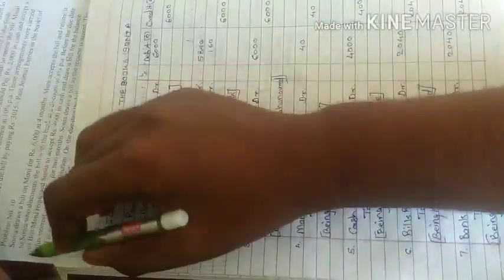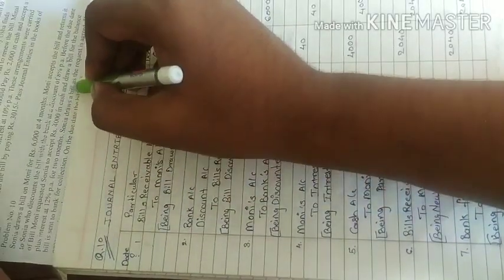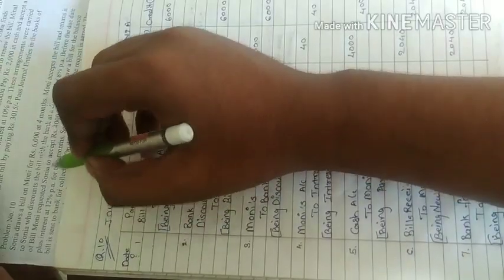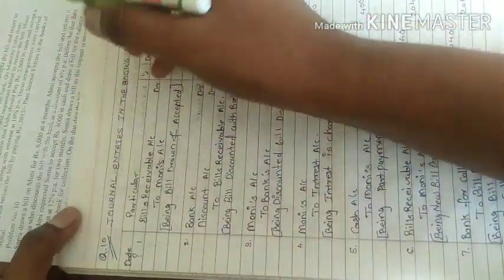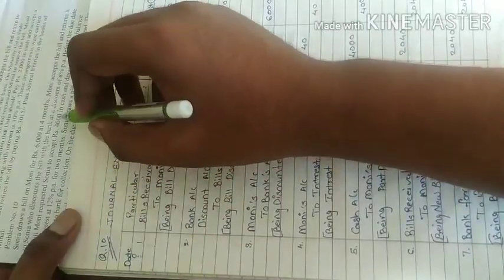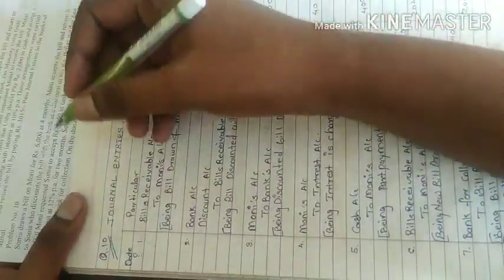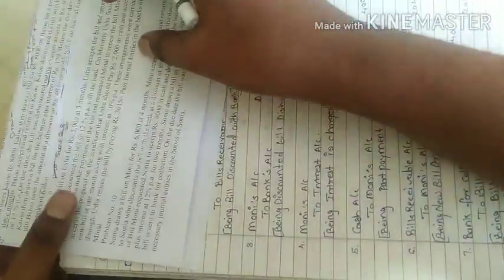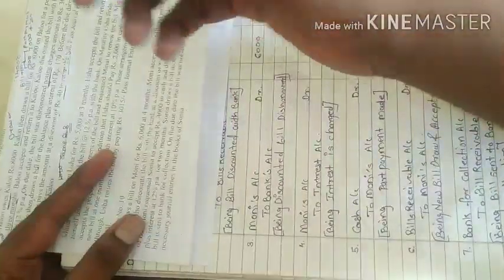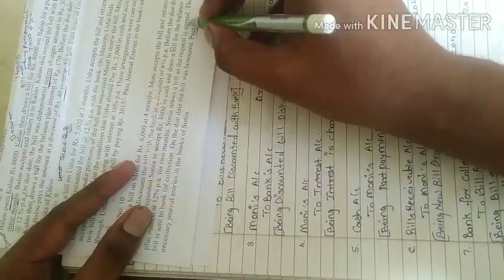Before the due date of bill, Money request Sonia to accept 4,000 in cash and draw a bill for the balance plus interest 12% per annum for 2 months. He requested Money cancel new bill. So first payment cash 4,000. This condition has given. Now Sonia accept, Sonia draw a bill as a request agreed.